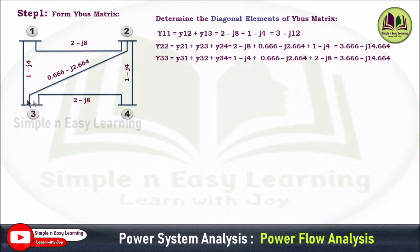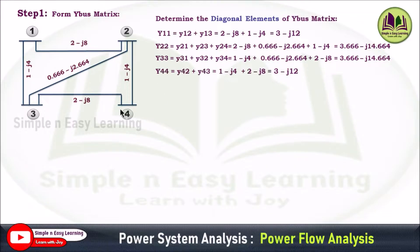For Y33, at bus 3, three lines are connected: Y31, Y32, and Y34. Add all those values and you will get the answer. For Y44, at bus 4, only two lines are connected: Y43 and Y42. Just add these two values, 1−j4 and 2−j8, and you will get the Y44 value.